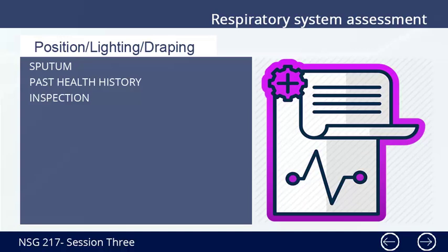Past health history should include respiratory infections or disease such as upper respiratory infections, history of trauma, history of previous surgery, and chronic conditions of other systems. Family health history should include tuberculosis, emphysema, lung cancer, allergies, and asthma.